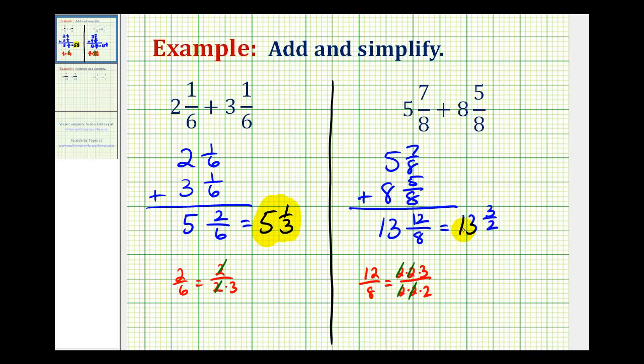But, again, we can't leave this mixed number with the fraction part being an improper fraction. So, now, we have to convert this improper fraction to a mixed number and then add it to 13. Remember, a fraction part represents division. So, three divided by two will help us convert this to a mixed number. Well, there's one, two, and three. We have a remainder of one. So, this tells us that three-halves is equal to one whole and one-half.